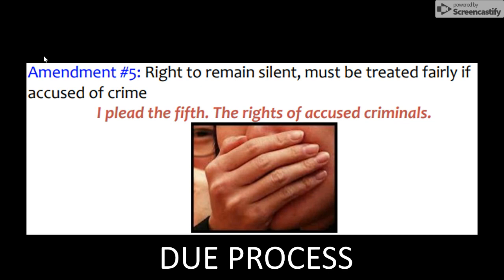With the Fifth Amendment, we also know that all people accused of a crime are due a process from the government. Due process means the government can't just say you're guilty and lock you up. You are due a process — the government will have to let you have a trial to prove whether you are innocent or guilty.